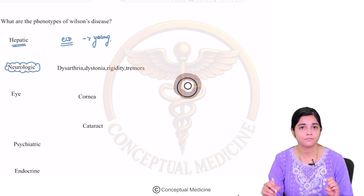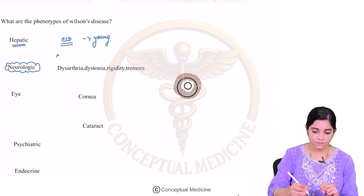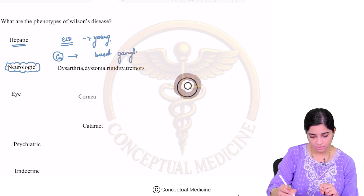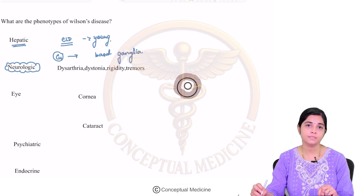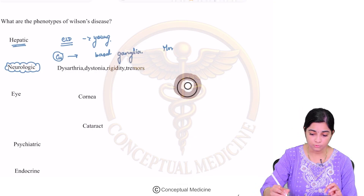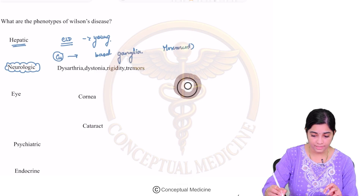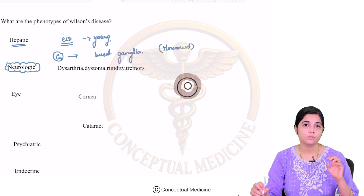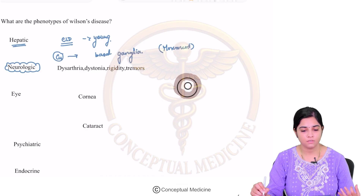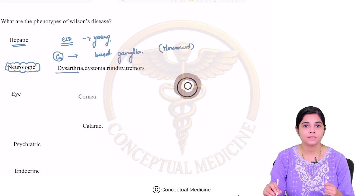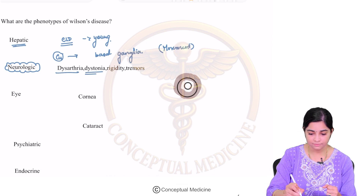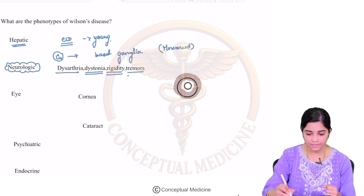What are the neurologic manifestations of Wilson's disease? The main problem is that there is copper deposition in the basal ganglia, which is basically involved in movement. So whenever there is copper deposition in the basal ganglia, you will have a wide array of movement disorders. There can be dysarthria, which is difficulty in articulation of speech, dystonia, rigidity, and tremors.